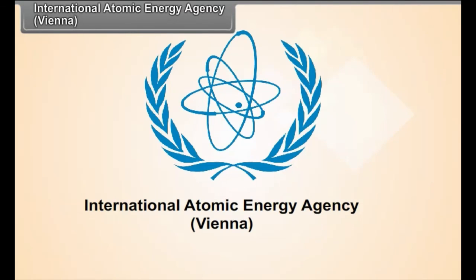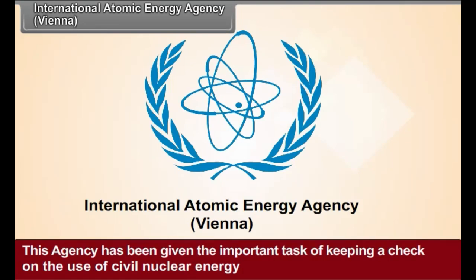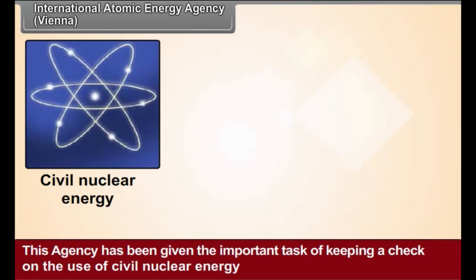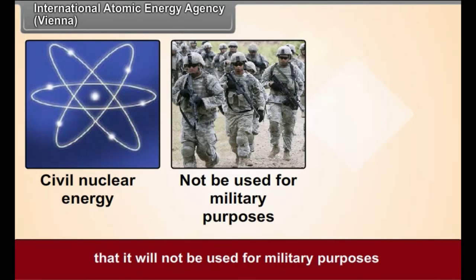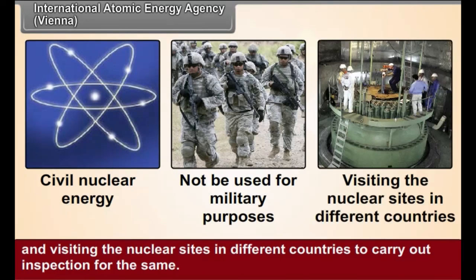The International Atomic Energy Agency, based in Vienna, has been given the important task of keeping a check on the use of civil nuclear energy to ensure it will not be used for military purposes, and visiting the nuclear sites in different countries to carry out inspection for the same.